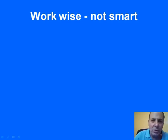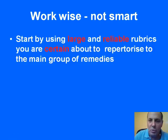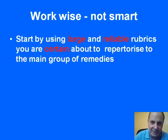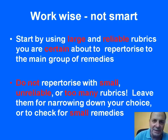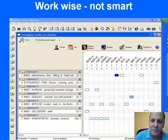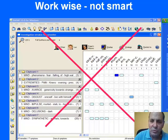So the idea is to work wise, not smart. Be broad first and then be more particular. Start by using large and reliable rubrics you are certain about to repertorize to the main group of remedies applicable to that case. Don't repertorize in the beginning with small, unreliable, or too many rubrics — leave that for narrowing down your choice or to check for small remedies later. A repertory with very small rubrics of 3, 4, 7, or 20 remedies is cutting it too fine. Smart, but not wise.